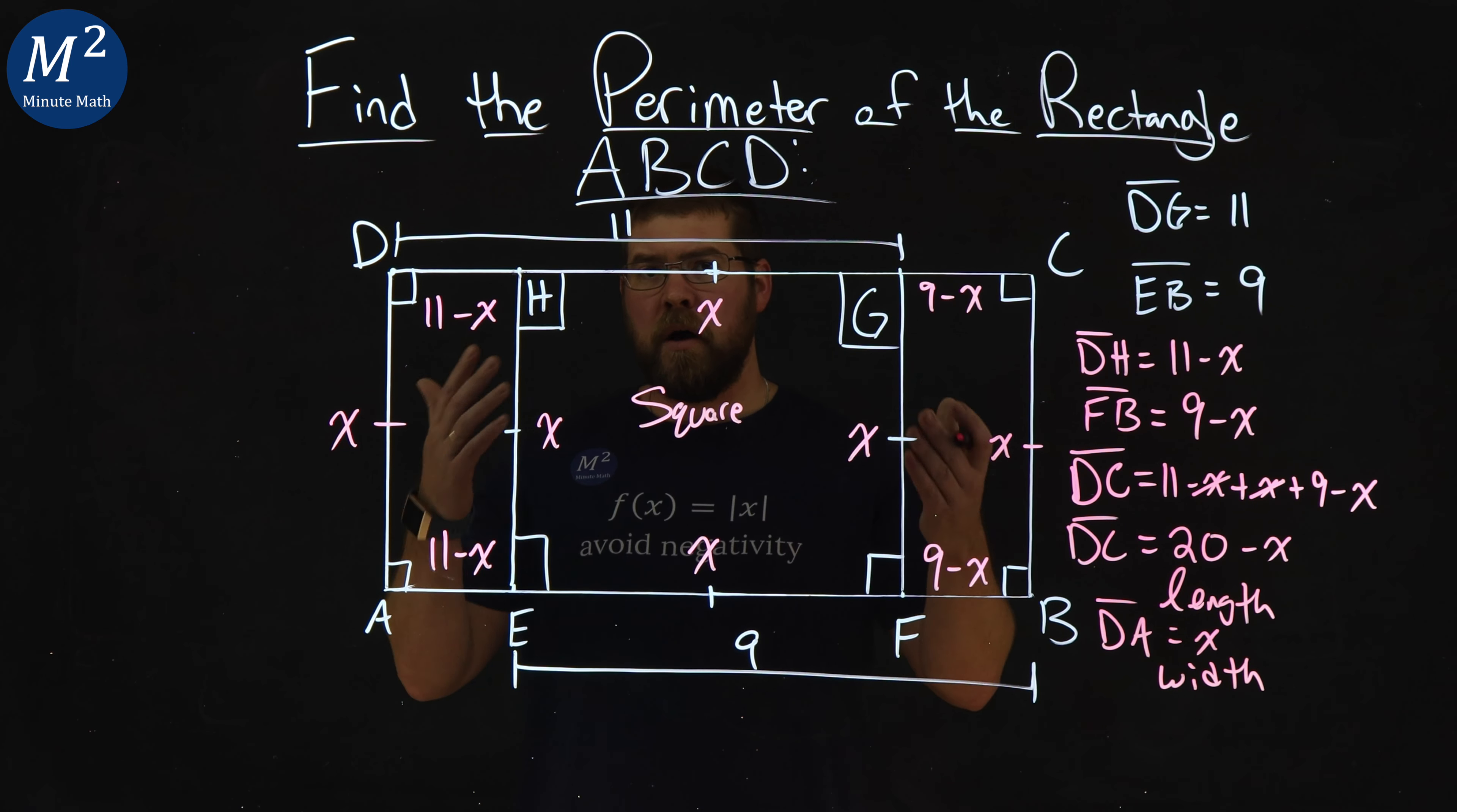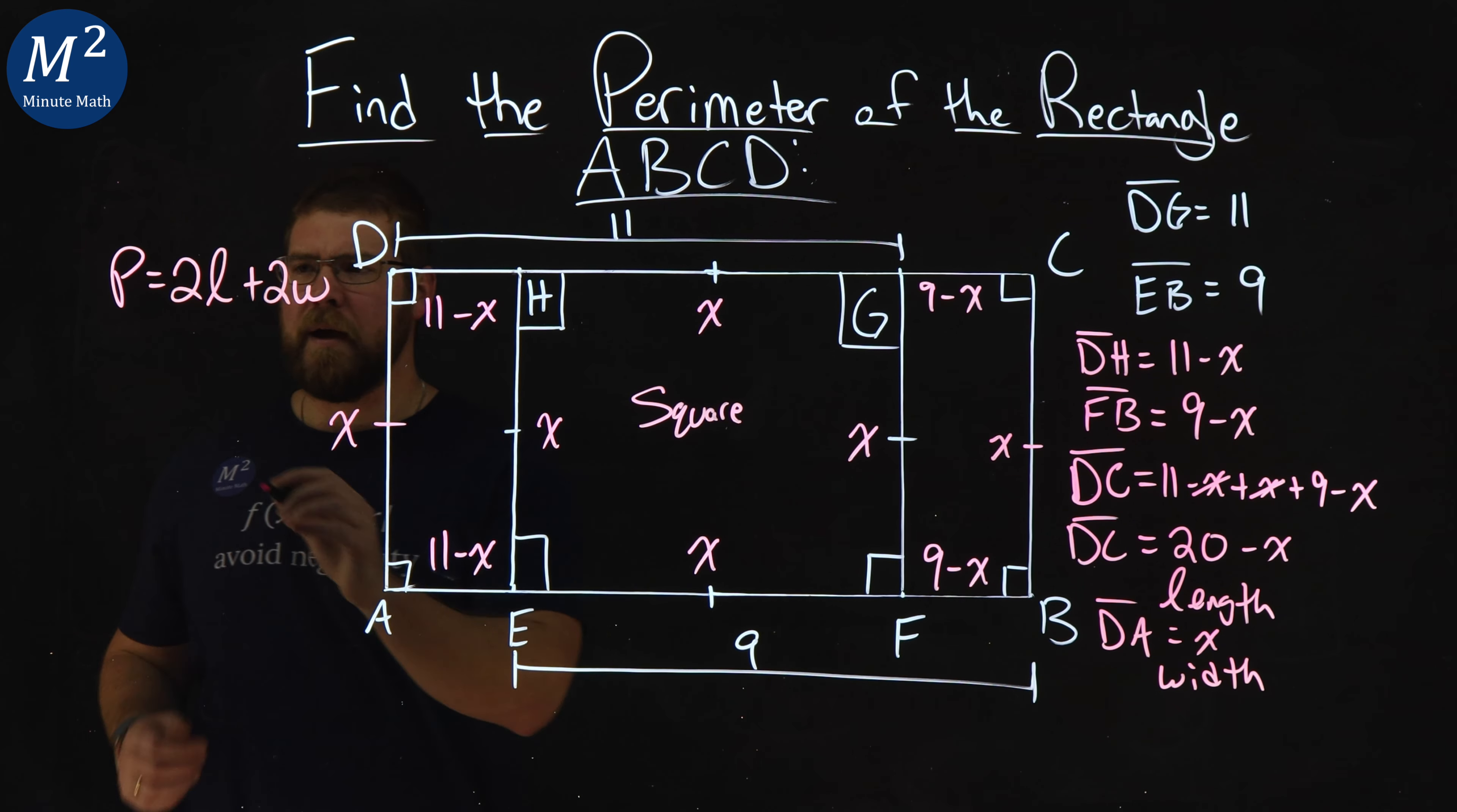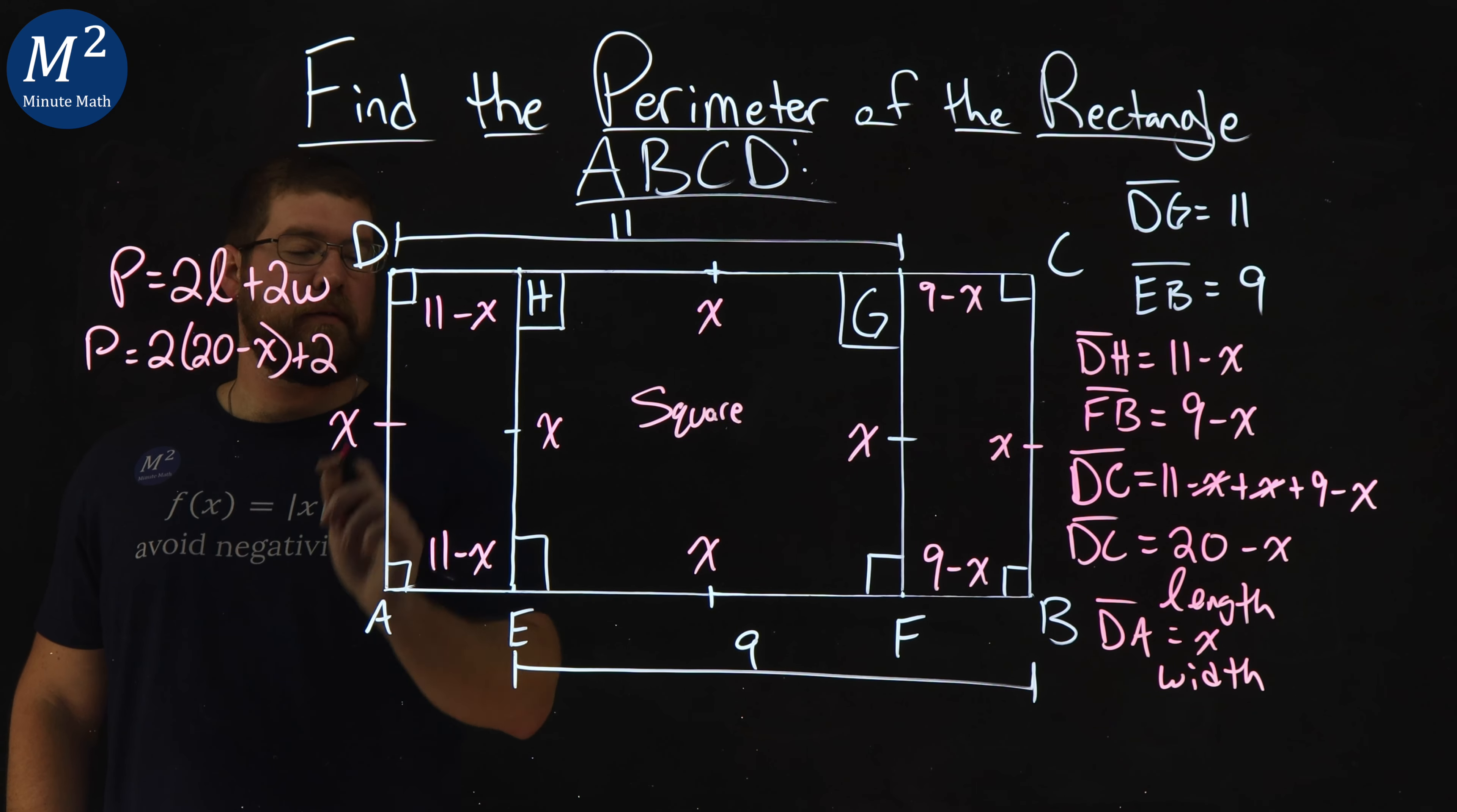So, what's the formula for the perimeter of a rectangle? The perimeter is 2 times the length plus 2 times the width. Okay? So, we have the perimeter here, 2 times our length, 20 minus X, plus 2 times the width, which is X.